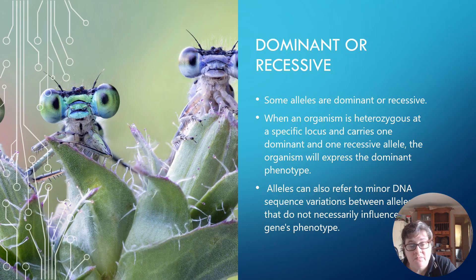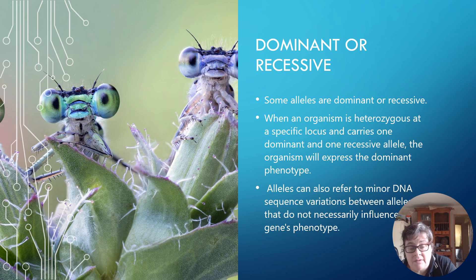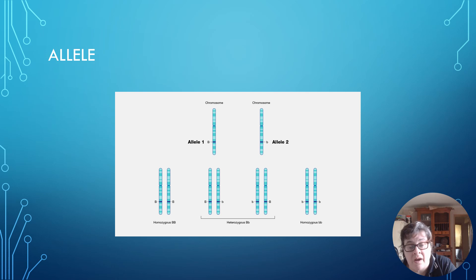Alleles contribute to the organism's phenotype, which is the outward appearance of the organism. Some alleles are dominant or recessive. When an organism is heterozygous at a specific locus and carries one dominant and one recessive allele, the organism will express the dominant allele. Alleles can also refer to minor DNA sequence variations between alleles that do not necessarily influence the gene's phenotype — that is, the outward appearance.